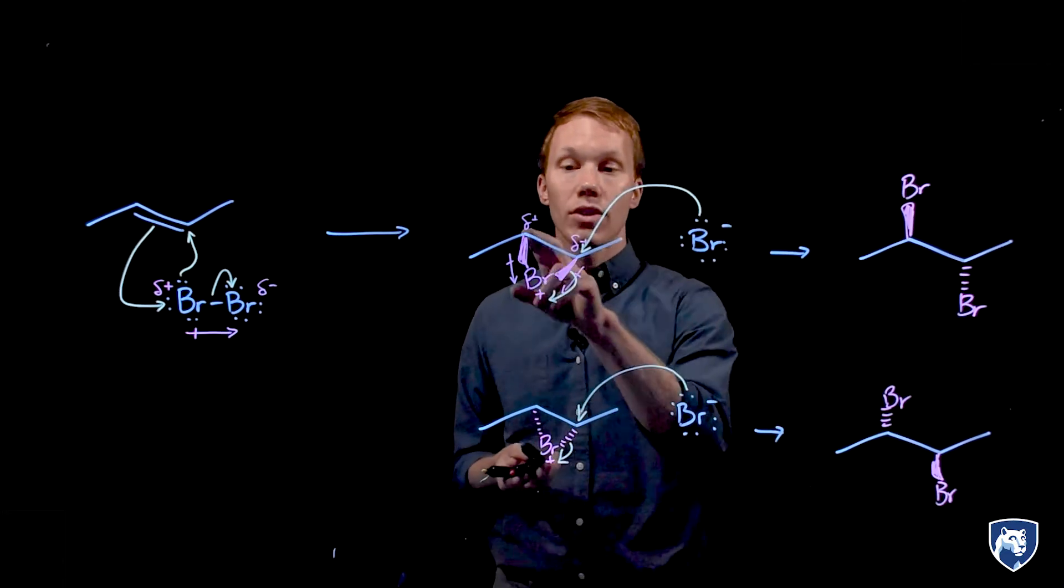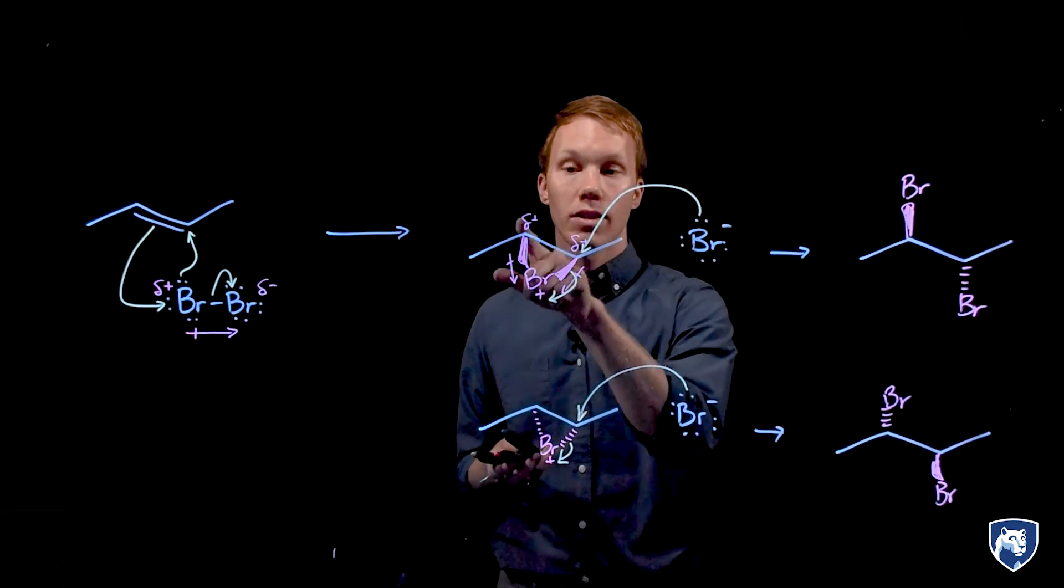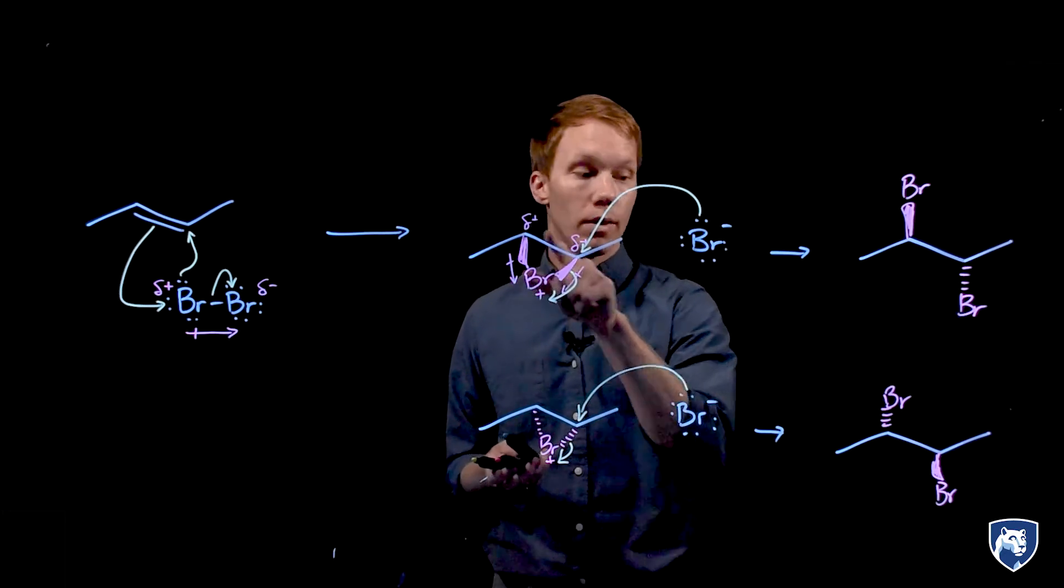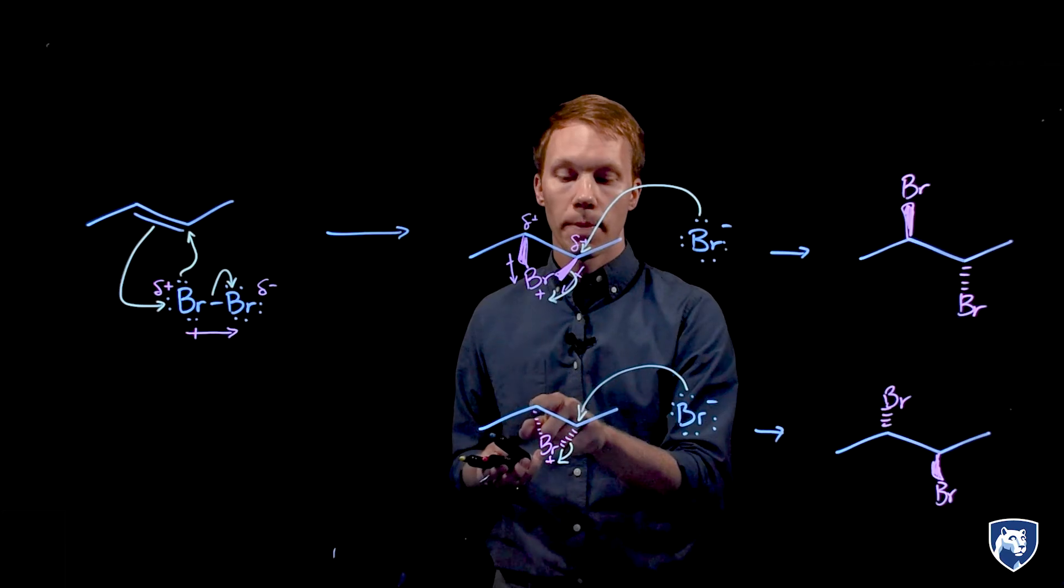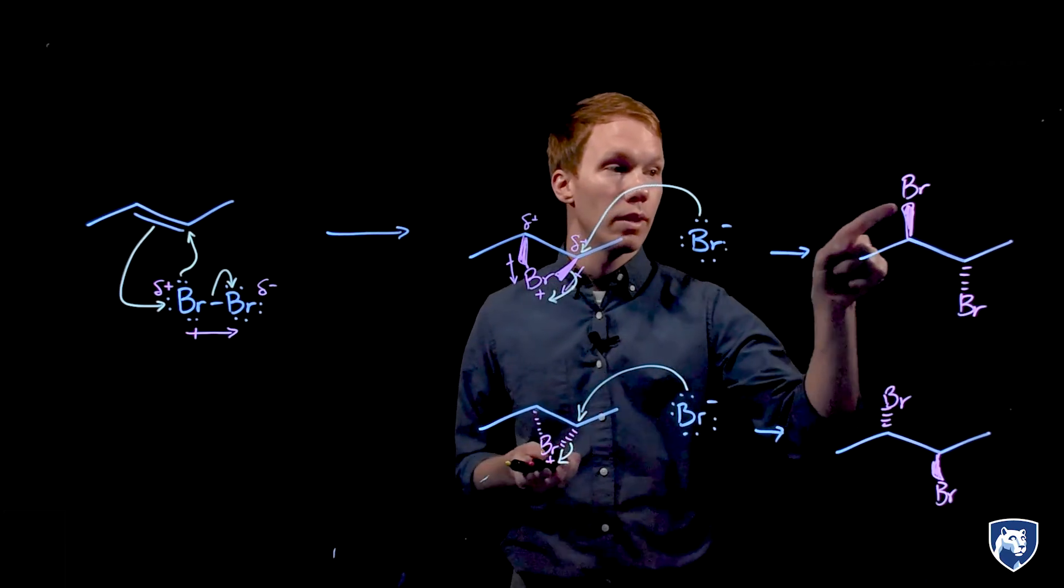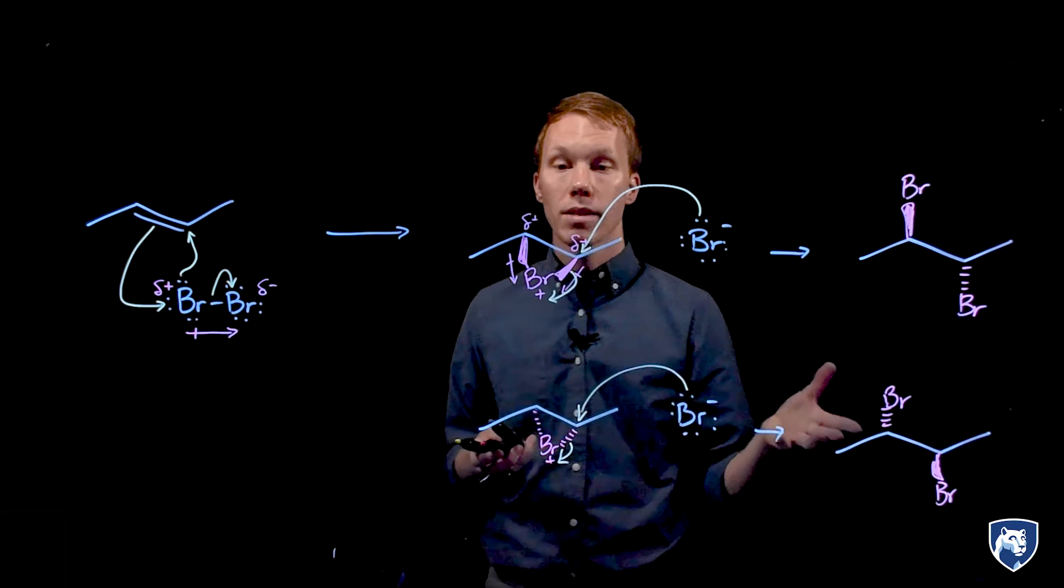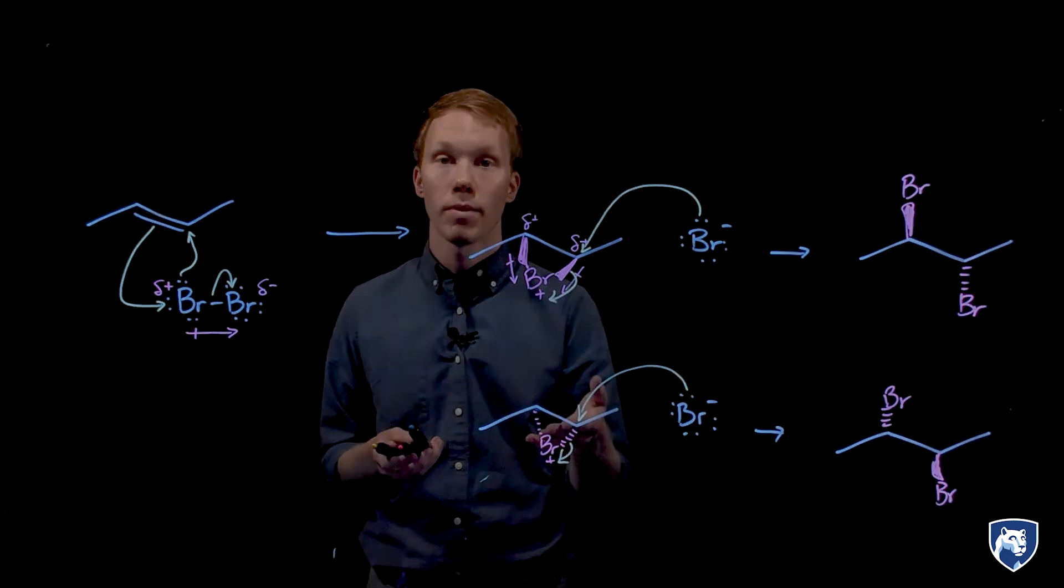The bromide could attack either carbon here, and if it attacked the carbon on this side, it would yield this product. And if the bromide in this situation attacked the carbon on the other side, it would yield this product. So only these two products are possible from these two enantiomers.